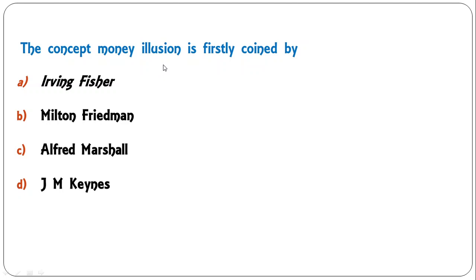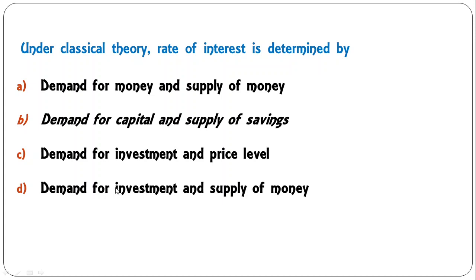Next question: the concept of money illusion was first coined by Irving Fisher, Milton Friedman, Alfred Marshall, or J.M. Keynes? The concept of money illusion was given by Irving Fisher. A is the correct answer.